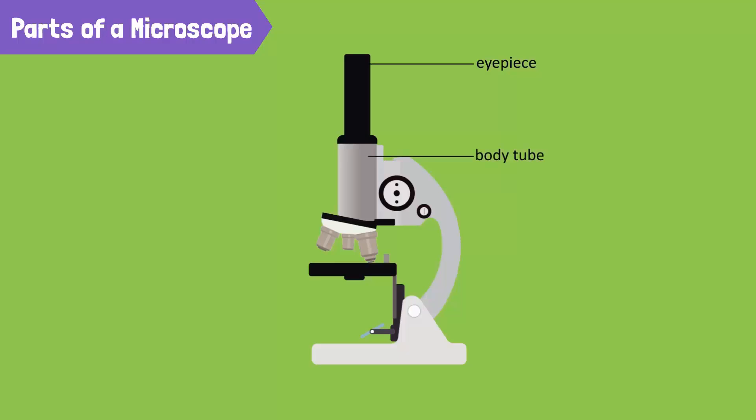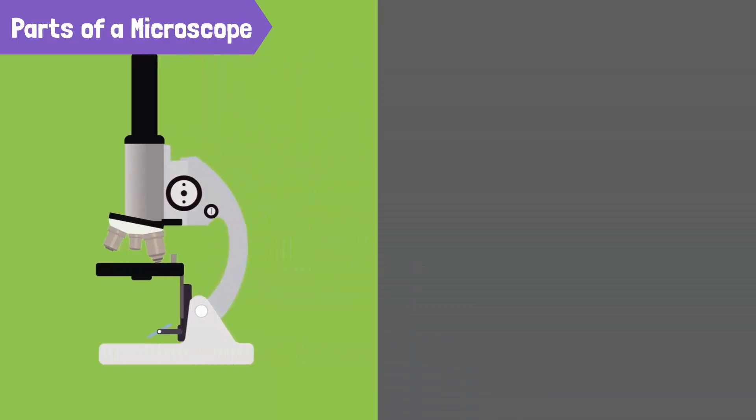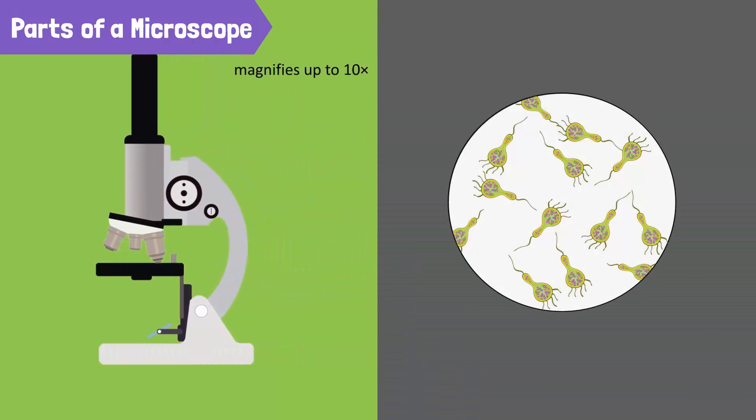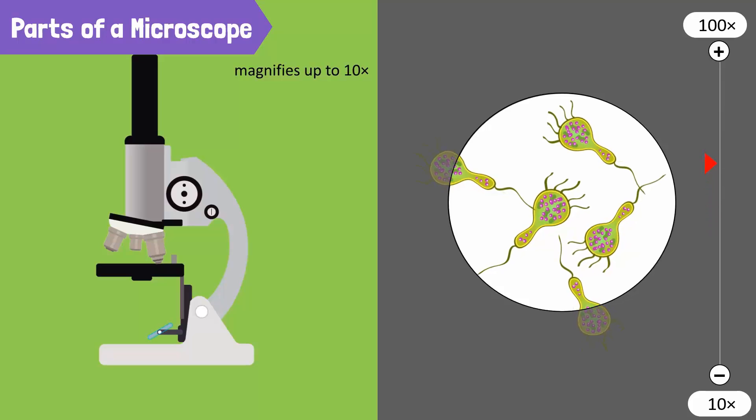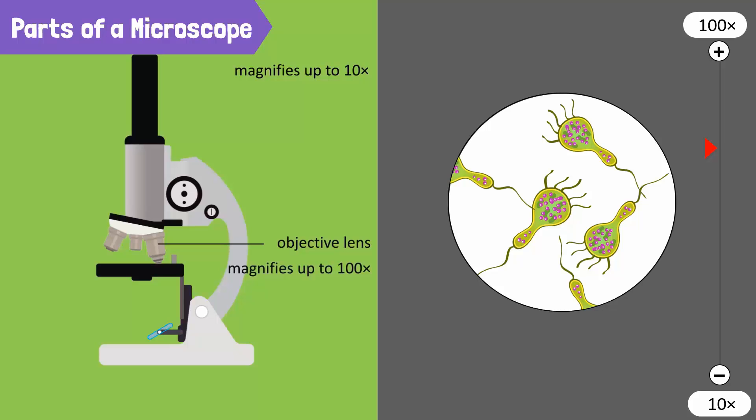The eyepiece can magnify a specimen up to 10 times and the objective lenses can magnify it another 100 times. This means that you can see the objects magnified 1,000 times. Wow! So, whatever I see is 1,000 times larger than its actual size? Yes!